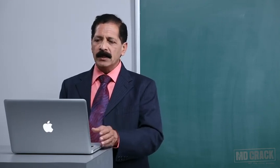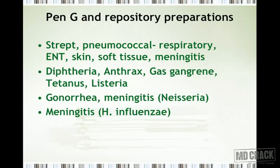Let's look at the uses. Streptococcal infections and pneumococcal infections leading to respiratory, ENT — ear, nose, throat infections — skin and soft tissue infections, and meningitis. Then the usual spectrum of penicillin G: Corynebacterium, diphtheria, Bacillus anthracis, and the Clostridia.